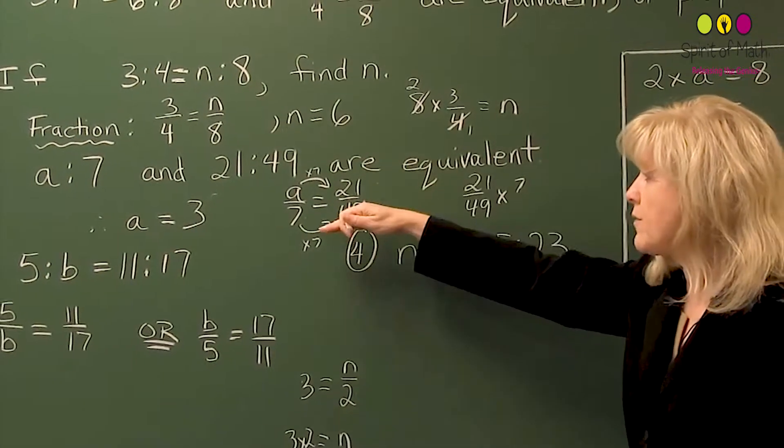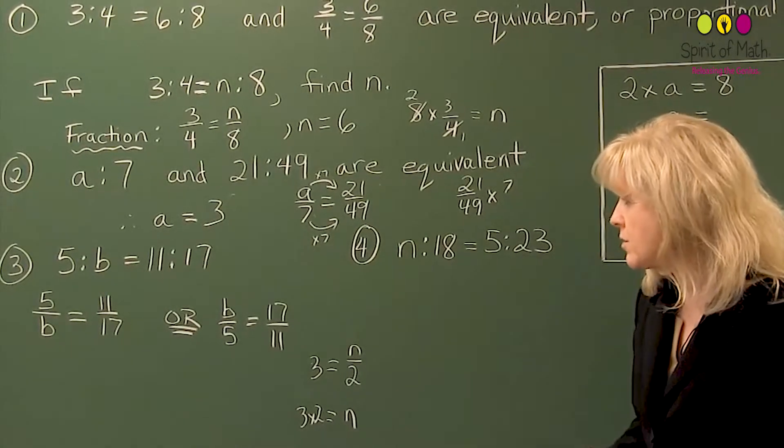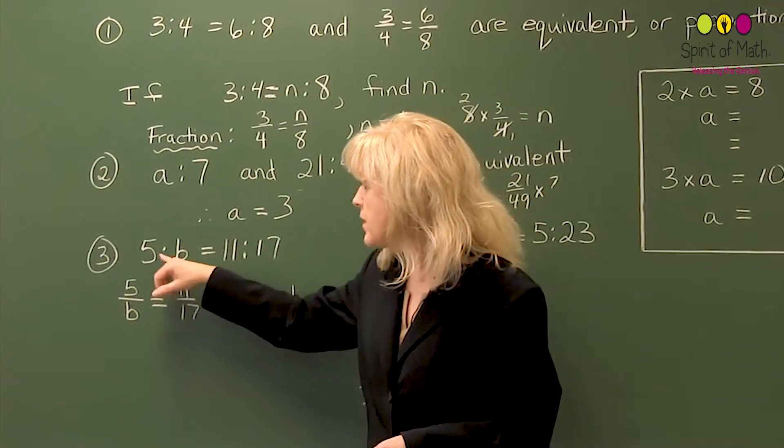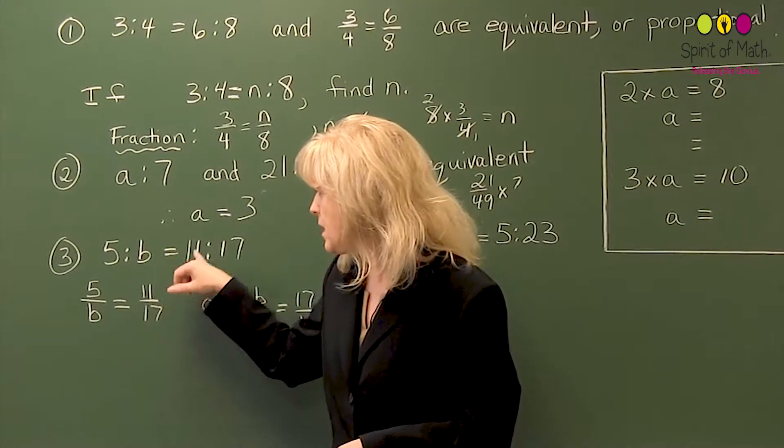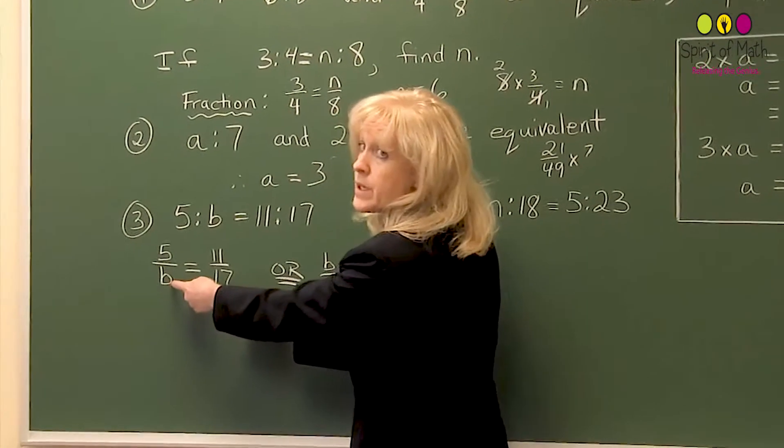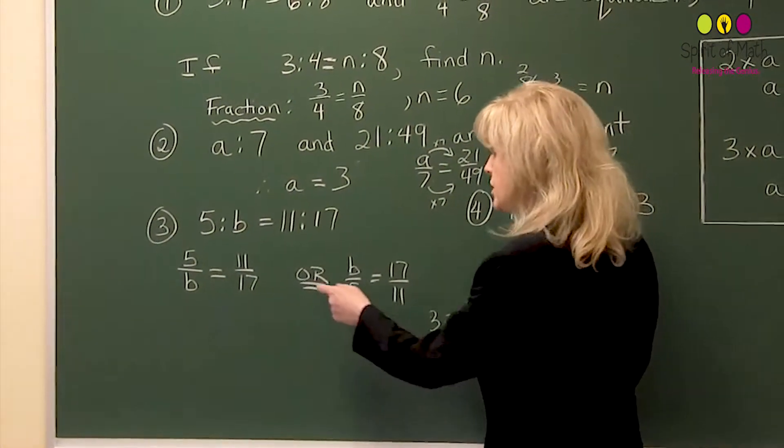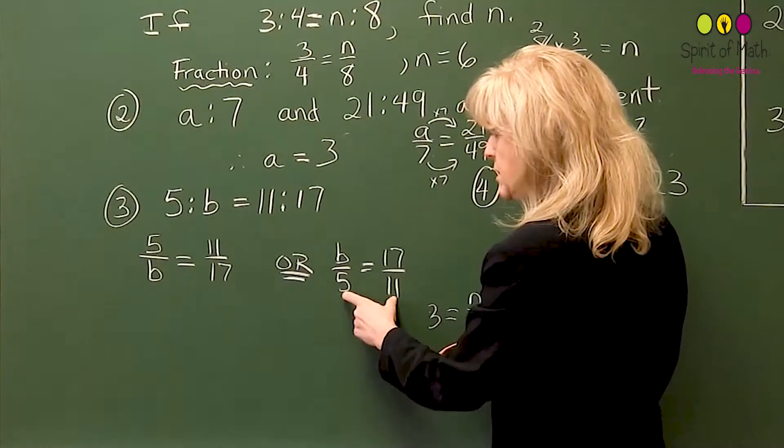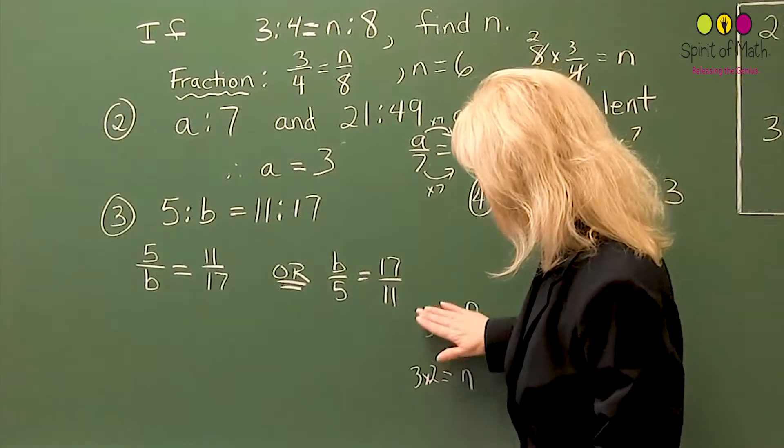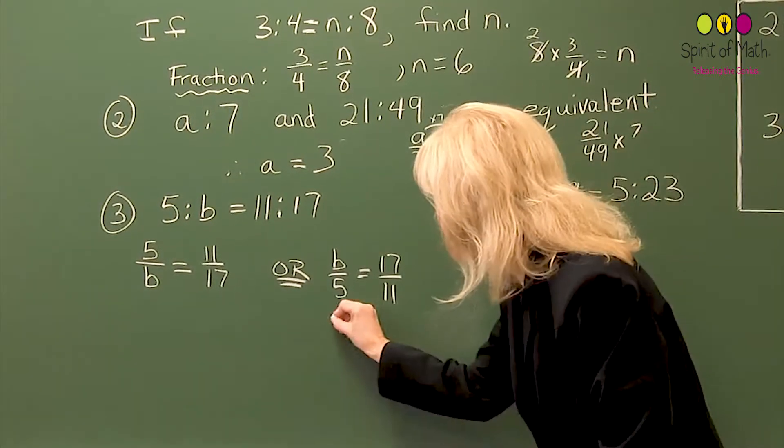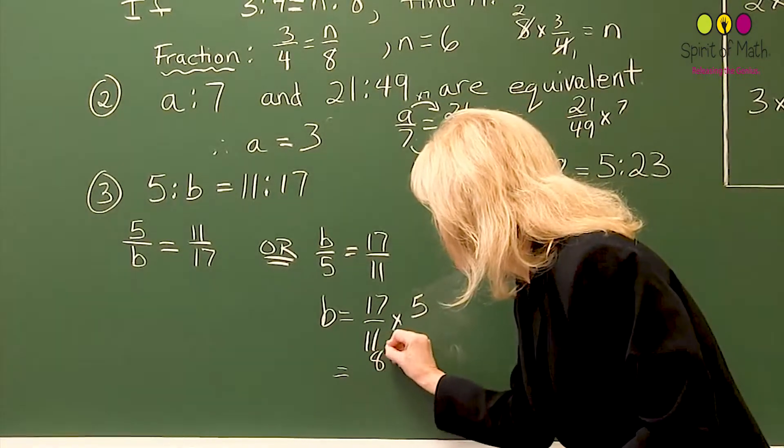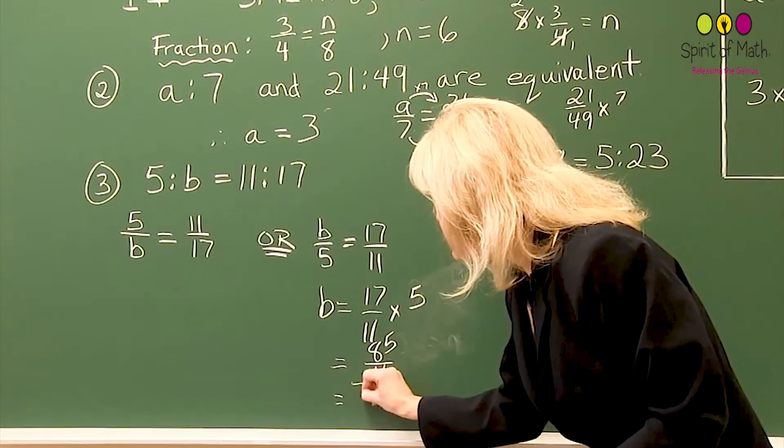Now, in this case, you've got five to b is equal to 11 to 17. So I've written this in two different ways. I've written it as a fraction five over b equals 11 over 17. I've made sure that the first two numbers are in the numerator and the last two in the denominator. Or you can do it the other way around. You could say, let's do it, the first two as the denominator and the second two as the numerator. And if you do that, sometimes students find this a little easier to calculate. And if you're to calculate that, I'm just going to do this quickly. This would be b equals 17 over 11 times 5. And so 17 times 5 is 85 over 11. And b would then equal 7 and 8/11.